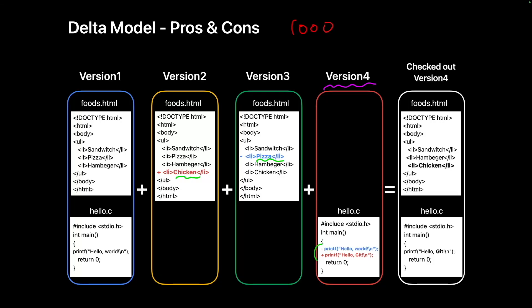In the delta model, you would need to apply all changes sequentially from the first version through the second, third, and all the way up to the 1,000th version. If there are 10,000 or even 100,000 versions, the more versions there are, the poorer the checkout performance becomes. While this method is efficient for storage, it has the major drawback of being inefficient during checkouts.